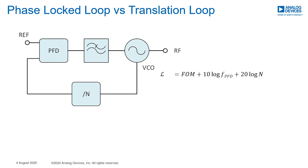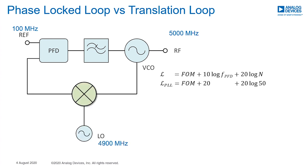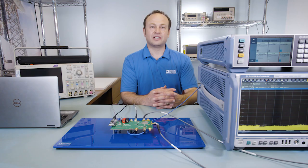Let's use some numbers as an example. The translation loop replaces the divider with a mixer. By down-converting the frequency to the reference frequency, we can effectively reduce the divider value to 1. Updating the equation, the noise can be reduced by about 34 dB. We can conclude that the translation loop significantly reduces the in-band phase noise.